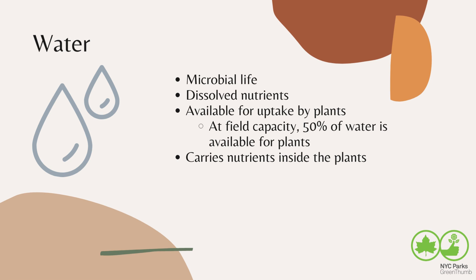Water is a crucial part of soil — this is where microbial life lives. No water means no microbial life, and we'll learn about the importance of microbial life in a little bit. Water is where nutrients are dissolved, which is how they become available to plants. When plants pull in water, the dissolved nutrients come with it, feeding the plant. When we talk about a soil's capacity to hold water, it's often called field capacity. At field capacity, 50% of the water is available for plants to take up. The other 50% is attached to the minerals and organic matter and is unavailable to plant roots.